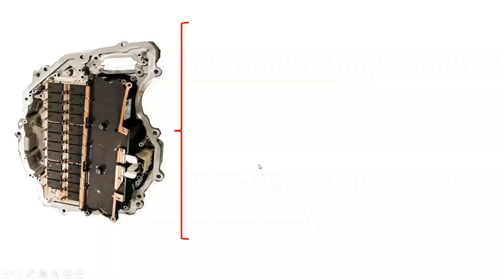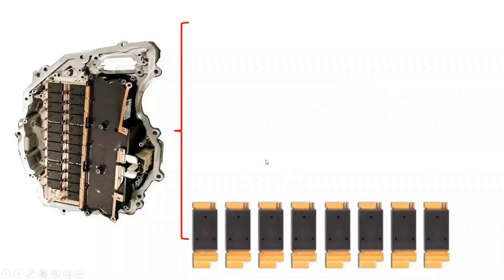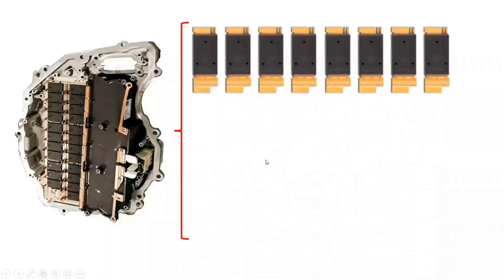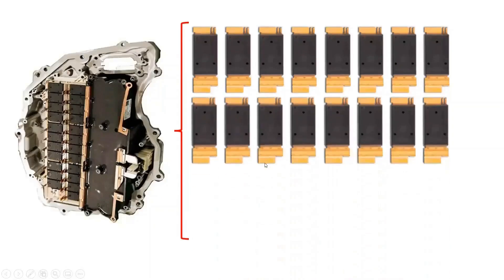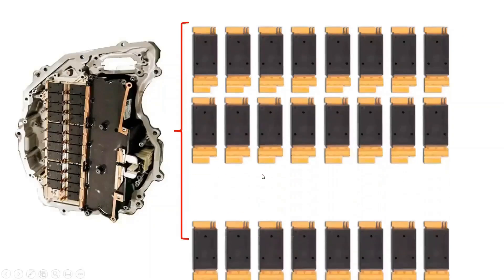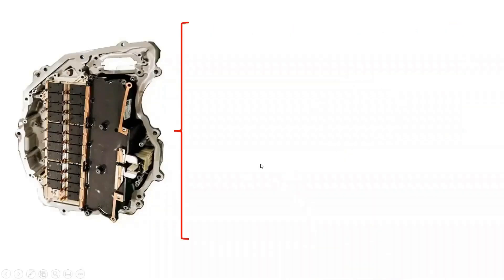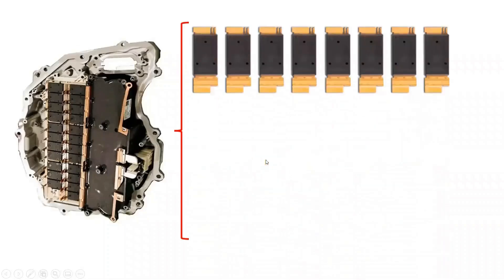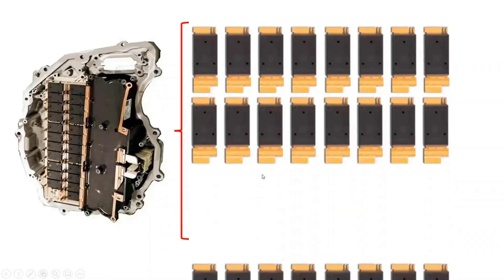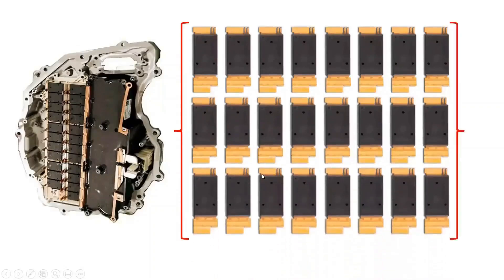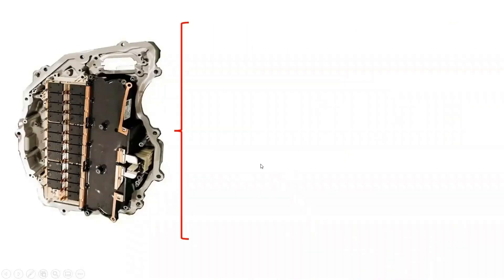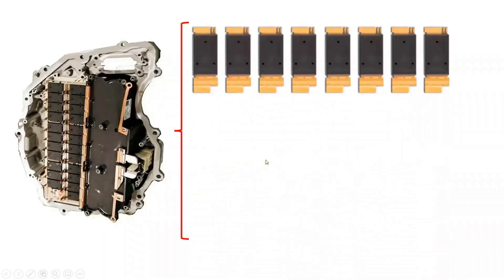The Tesla Model Y utilizes the same inverter topology as the Tesla Model 3, which consists of 24 silicon carbide MOSFETs from STMicroelectronics with a custom package designed for it. Each of the silicon carbide MOSFETs is rated at 650 volts and 100 amperes.